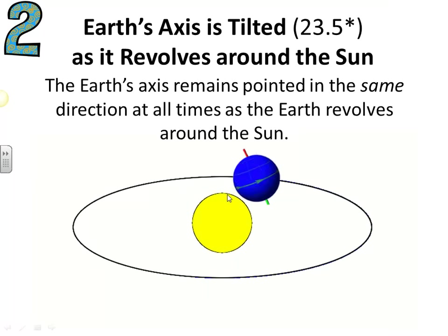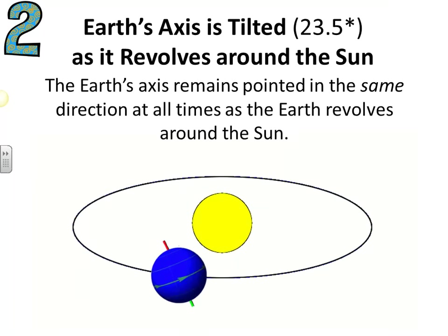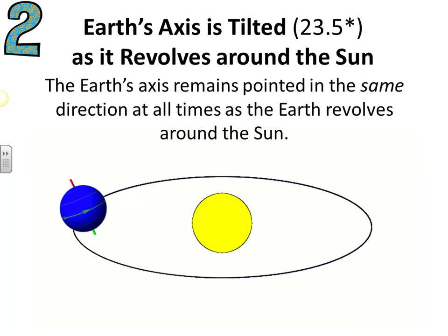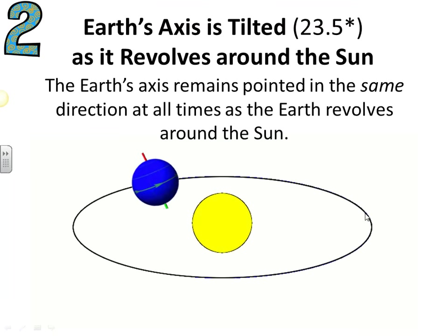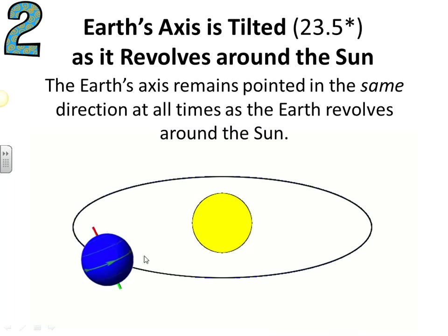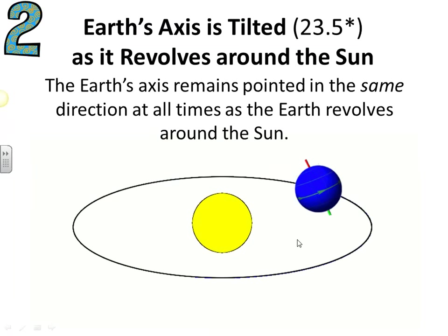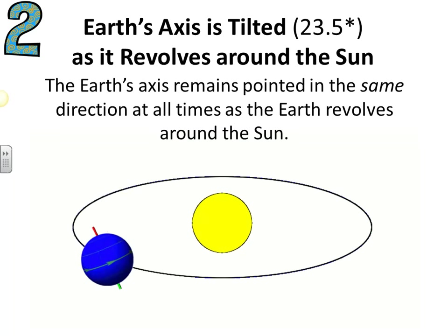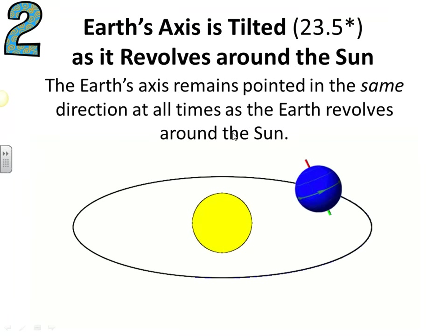The second reason, and it's vitally important, is that the Earth is tilted on its axis. The Earth is slightly slanted as it orbits the sun, and because of that tilt it causes the angle of the rays and the length of day to change over the course of the year. One important detail is that the tilt remains the same as it orbits the sun — it isn't fluctuating, it stays in the same position, but the way the rays from the sun strike the Earth change as it orbits.